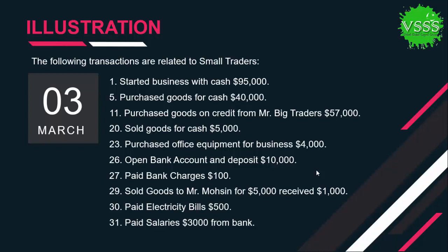We take an example of a small trader for the month of March. The transactions are: started business with cash $95,000; purchased goods for cash $40,000; purchased goods on credit from Mr. Big Trader $57,000; sold goods for cash $5,000; and purchased office equipment for business $4,000.